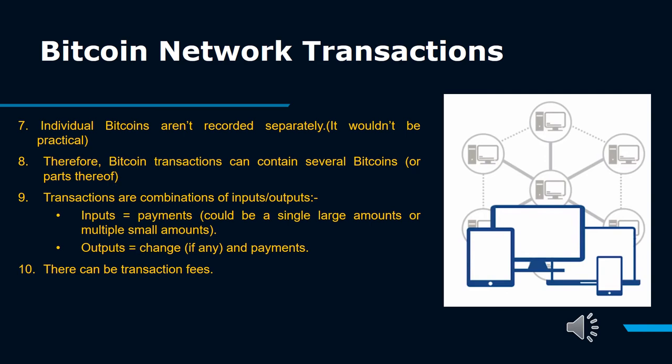The UTXO database resides in a full node. Either a wallet or a third-party service maintains a database of UTXOs identified by the user's private key. To spend Bitcoin means looking for available UTXOs and determining which denominations make up the required amount for the recipient. Like paper money, each UTXO is indivisible. Therefore, if one or more UTXOs are larger than the amount to be paid, change is made in the form of a new UTXO — the same as buying something for $6 with a $10 bill and getting $4 in change.